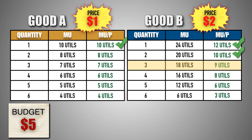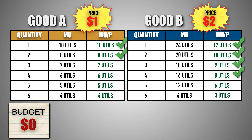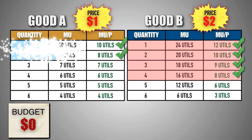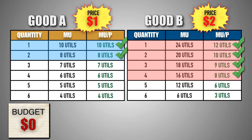At 9 utils per dollar, the third unit of good B has a greater marginal utility per dollar than the second unit of good A. As a result, the consumer will buy the third unit of good B at a price of $2, leaving the consumer with $3 left in their budget. At 8 utils per dollar each, the second unit of good A and the fourth unit of good B have the same marginal utility per dollar. As a result, the consumer will buy the second unit of good A at a price of $1, leaving the consumer with $2. Then the consumer will buy the fourth unit of good B at a price of $2, leaving the consumer with nothing left in their budget. The consumer has used their entire $10 budget to buy four units of good B and two units of good A, and has maximized their utility at 96 total utils.